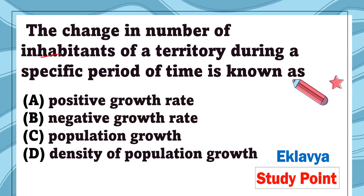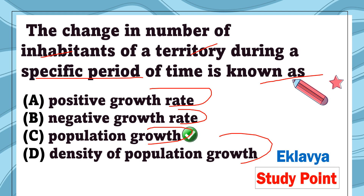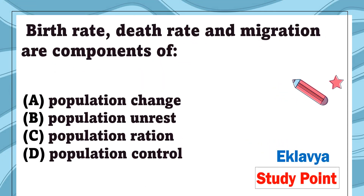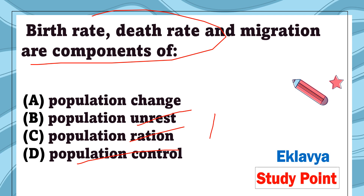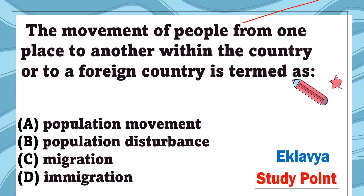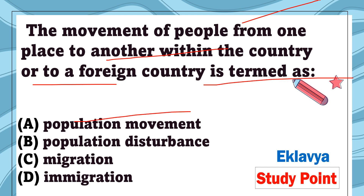Question 20: The change in number of inhabitants of a territory during a specific time period is known as — positive growth rate, negative growth rate, population growth, or density of population. The correct answer is population growth. Question 21: Birth rate, death rate, and migration are components of — population change, population unrest, population ration, or population control. The correct answer is population change, because these three factors change the population.